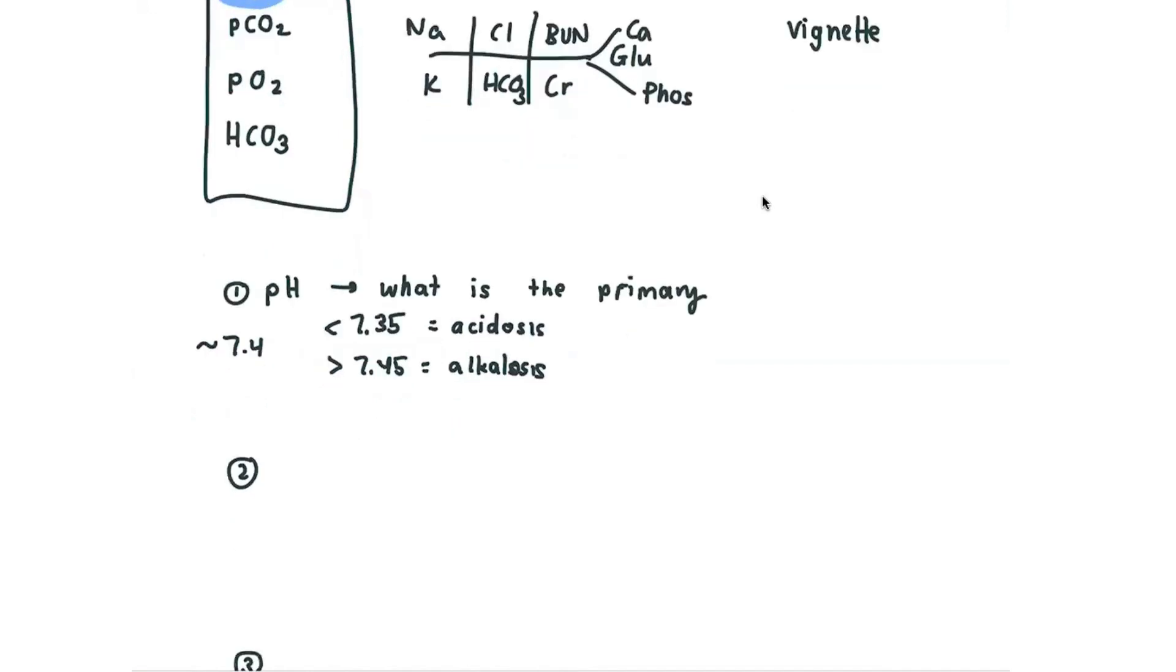And so then the second step is actually a pretty funny step. And that step asks the question, if I were in a court of law, what supports my primary disturbance? So if I were in a court of law, what supports my primary acidosis or alkalosis? That's the important question.